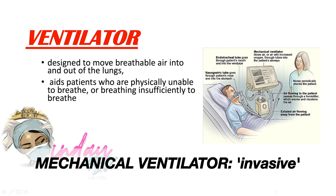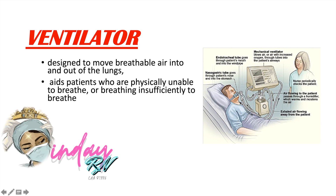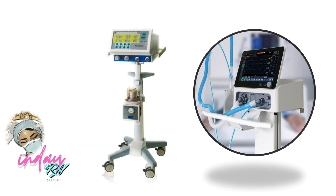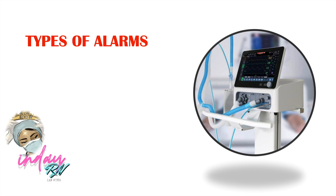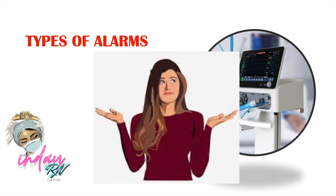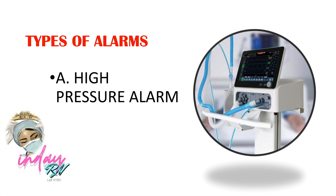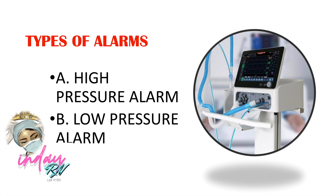Mechanical ventilators are invasive and involve instruments used to save the patient's airway or life. There are different kinds of ventilator machines — they can be portable or large machines. Let's discuss the two types of alarms in mechanical ventilators: high pressure alarms and low pressure alarms. We cannot avoid these alarms because they are constantly provided for patient safety.